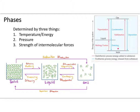Looking at the energy diagram, we have energy of the system on one axis and the various phases of matter. The solid starts at the lowest energy. Adding energy — indicated by red arrows showing an endothermic process — takes us from solid to liquid (melting) and from liquid to gas (vaporization). Both of these processes require energy input.